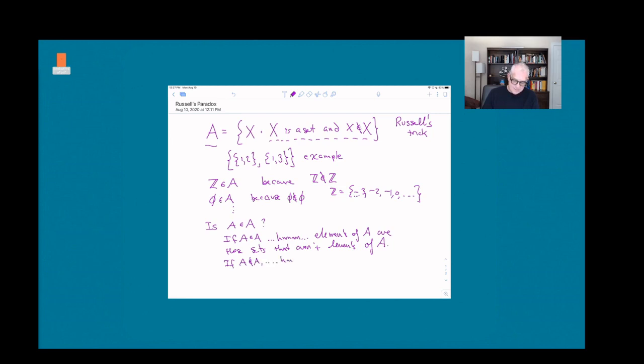On the other hand, if A is not an element of A, then A should be an element of A, because the elements of A are exactly the sets that aren't elements of themselves.